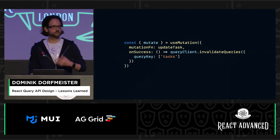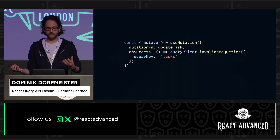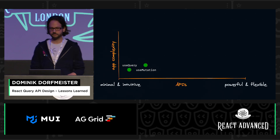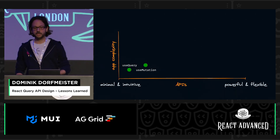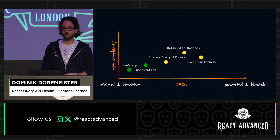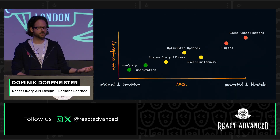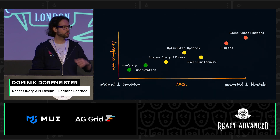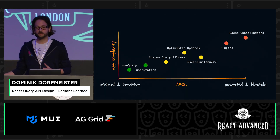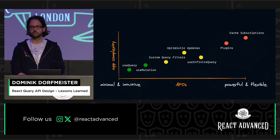Later on, we might add a useMutation call to make an update and then link it back with invalidateQueries. So this is already a little bit more involved, but we can get really far with just those two functions. But as time goes on and your application becomes more complex, you might want to do more things — like optimistic updates or infinite queries. And those APIs are certainly a bit more complex. All the way up, we have things like our plugins or the cache subscriptions, which are really low level. For example, our dev tools are built with the cache subscriptions. But once you get to a point where you need this complexity, you're probably happy that those exist — just like you are about using reduce from time to time.